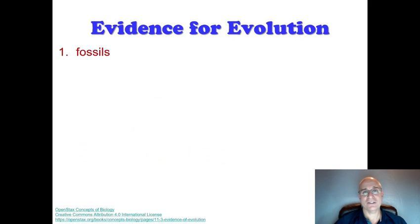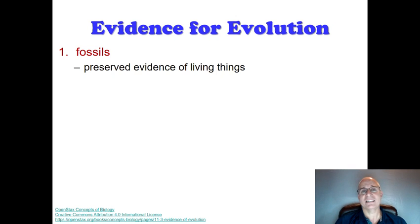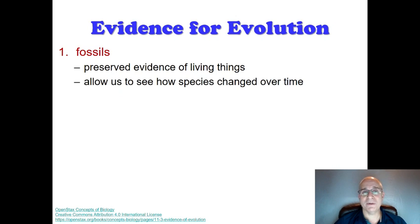The first idea is fossils. What is a fossil? A fossil is preserved evidence of living things. There are lots of different types of fossils — commonly we find remains of old bones that were mineralized over time. Sometimes we find insects trapped in amber, which is tree sap that has been fossilized. There are even fossilized footprints. A fossil is just preserved evidence of living things, and one of the great things about fossils is that they show us how living things have changed over time.